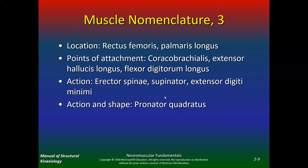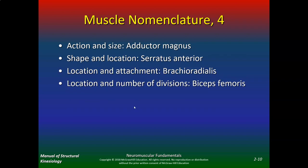So don't just memorize muscles thinking these are weird names — they're named for a reason: location, size, how they look, number of divisions, or direction of fibers. The name tells you a lot. Adductor magnus — it adducts and it's rather large. Shape and location: the serratus — it's serrated, I call that the Bruce Lee muscle — and it's on the anterior side. Brachioradialis goes from your arm to your radius. Located near the femur with two divisions — those are your hamstrings.